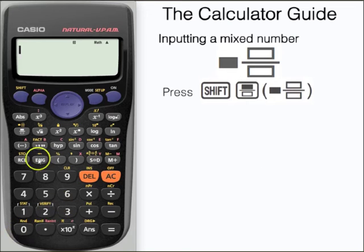Let's have a look now at inputting a mixed number. We can see that that's here above the fraction button, so again we need to press shift first. Notice how we have the little S here in the top left hand corner. And then press the fraction button to give us the mixed number.